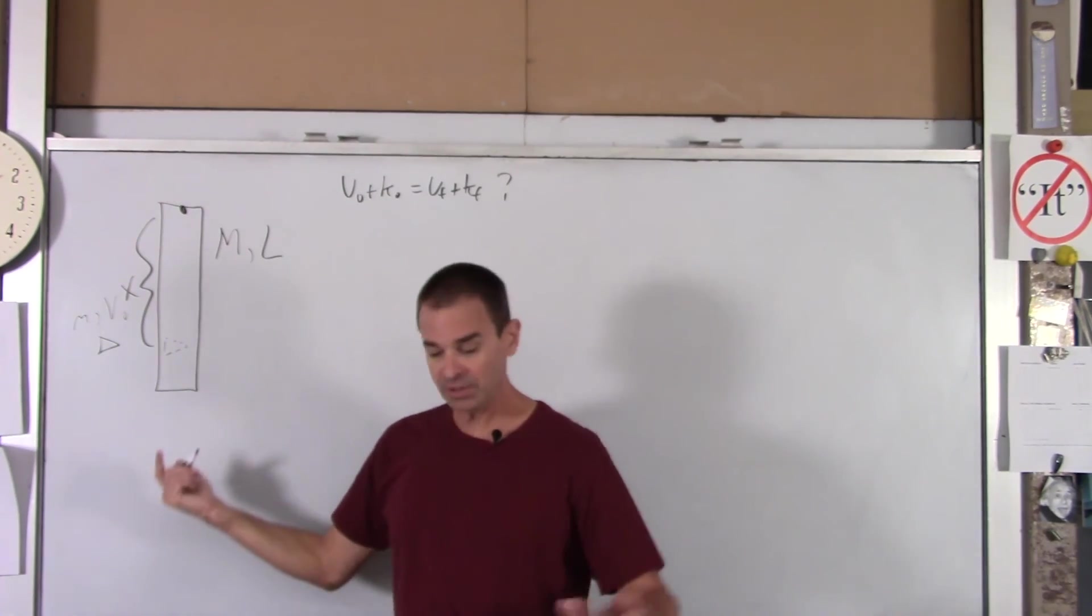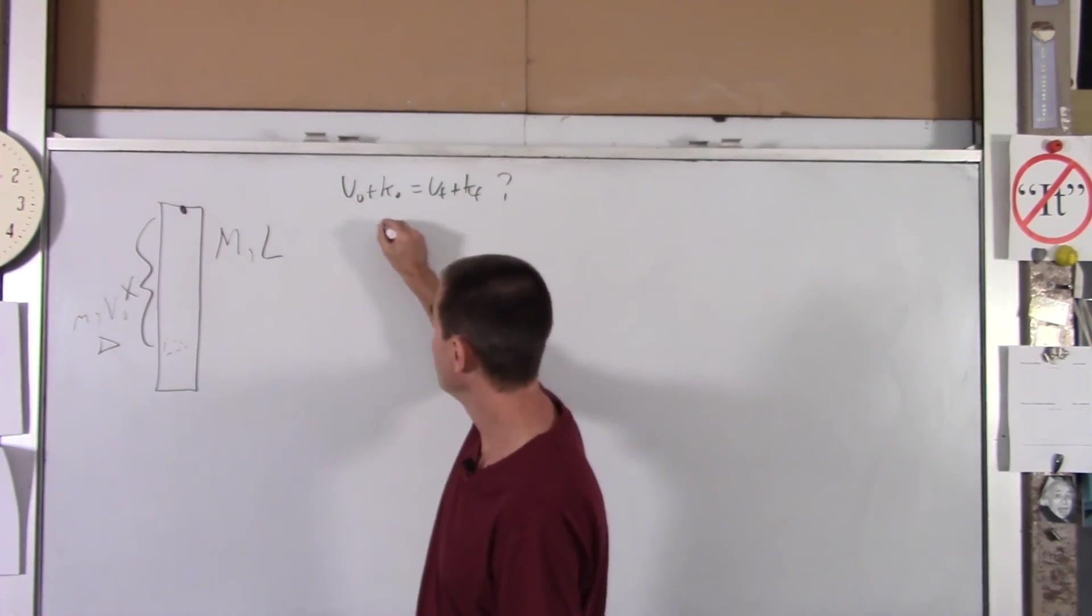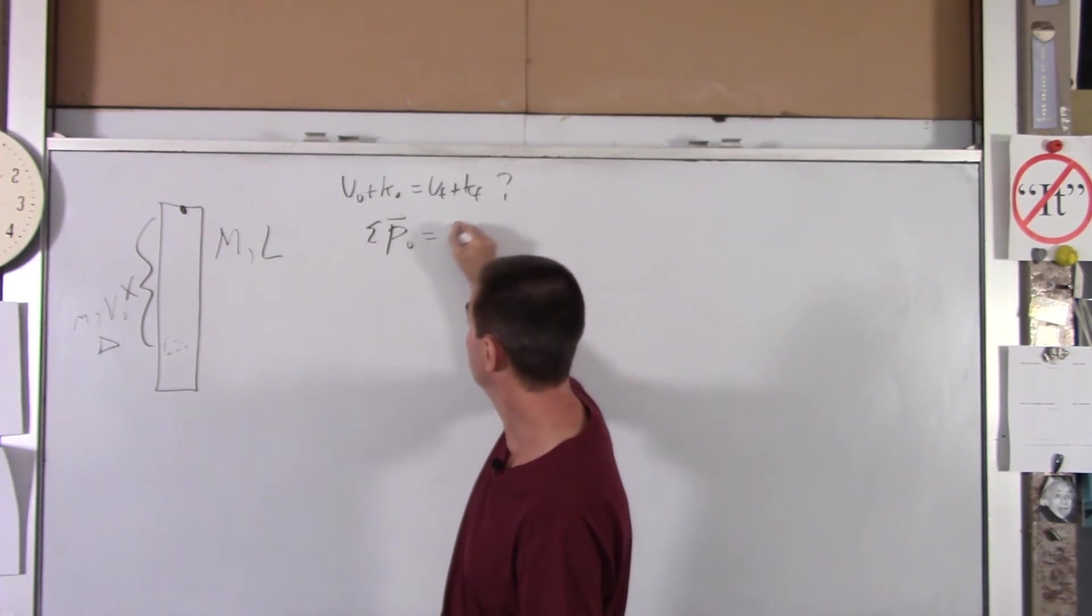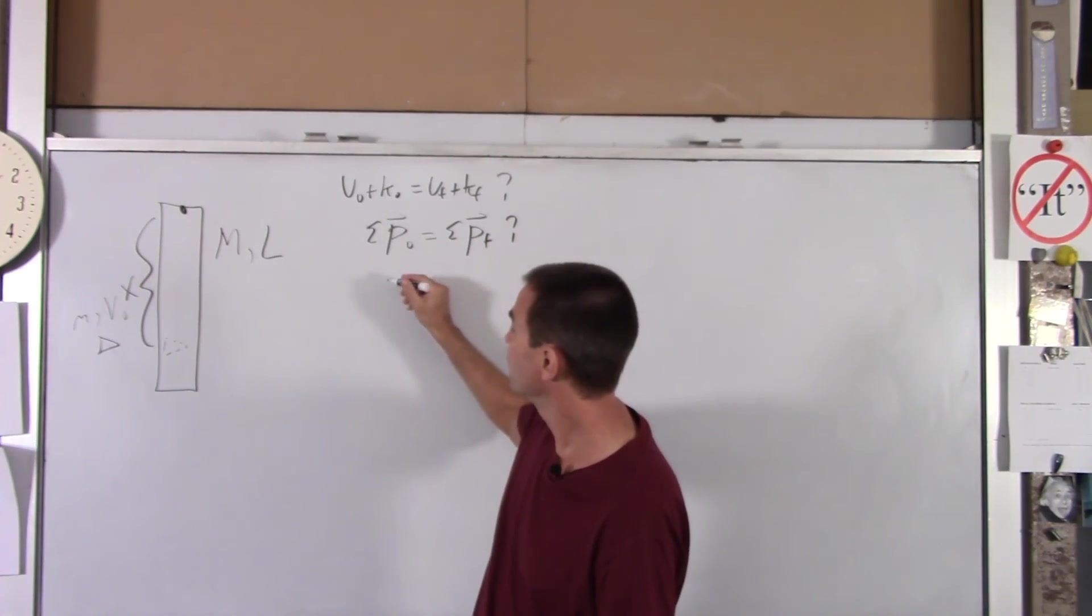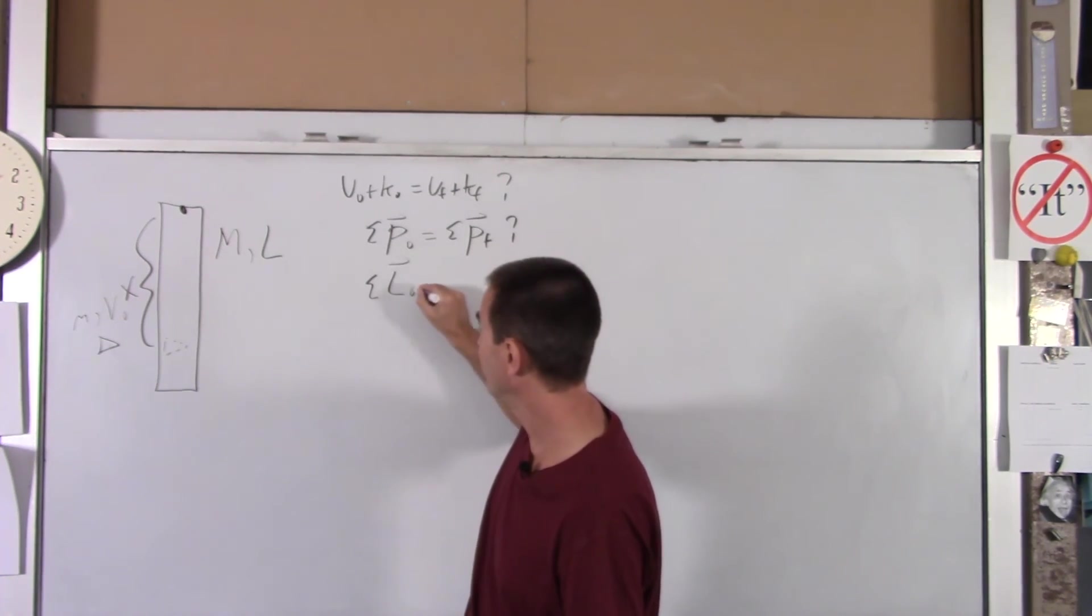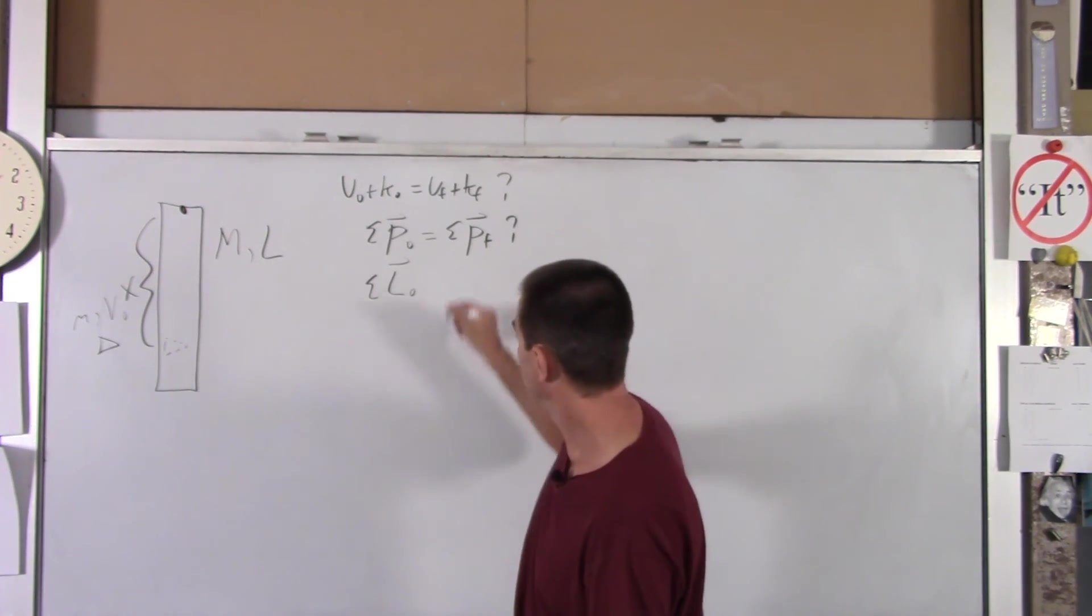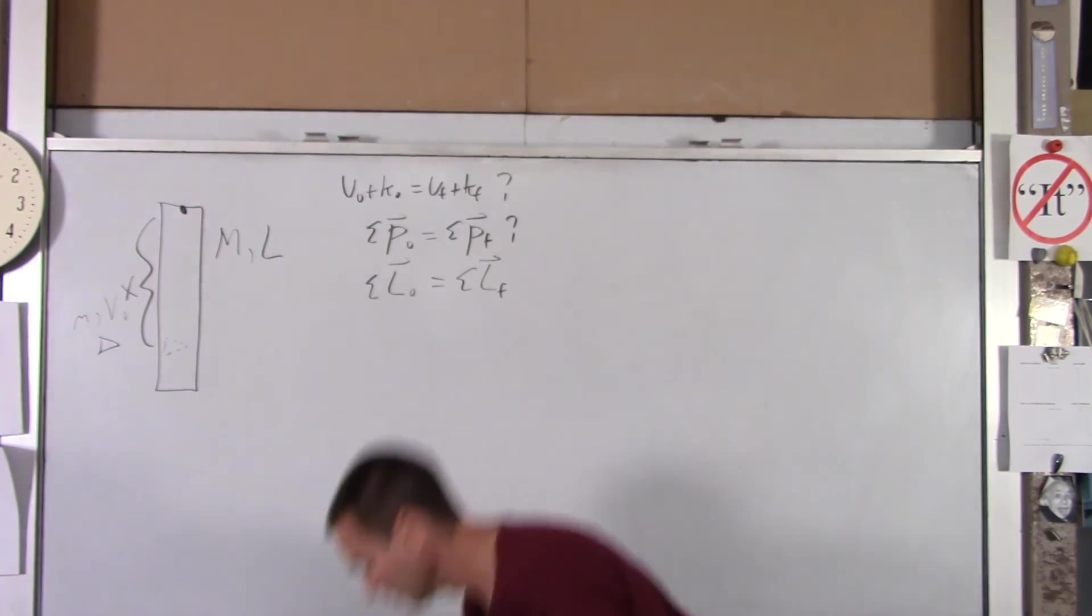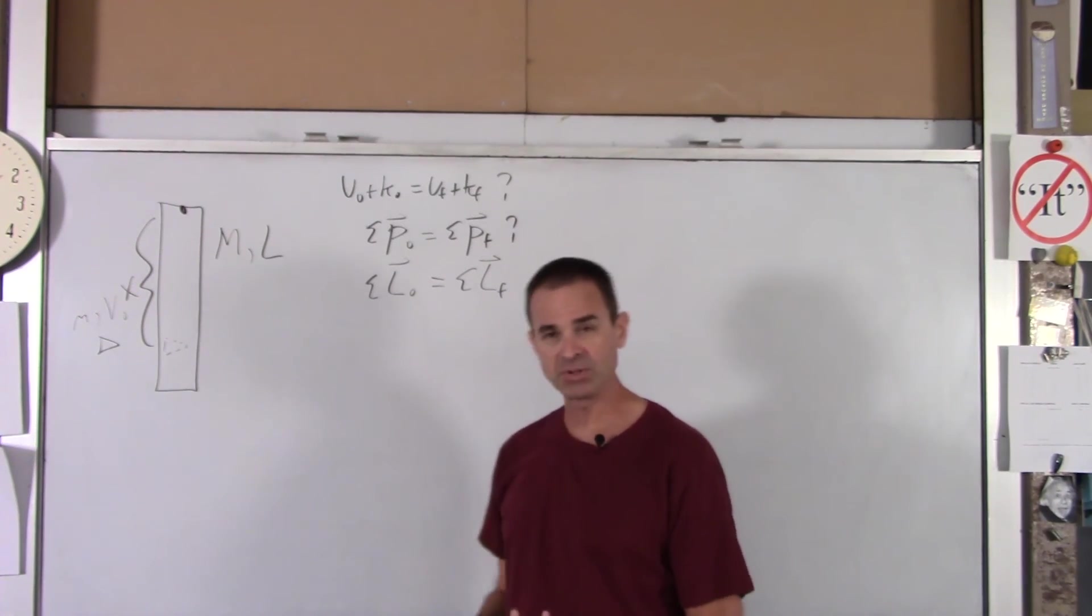We could also check, well, in collisions, you guys are used to using linear momentum. So maybe the total momentum before the collision equals the total momentum after. Maybe that's true. And number three, angular momentum might be conserved. So the total angular momentum beforehand might equal the total angular momentum after. So which one do we use, or can we use that?